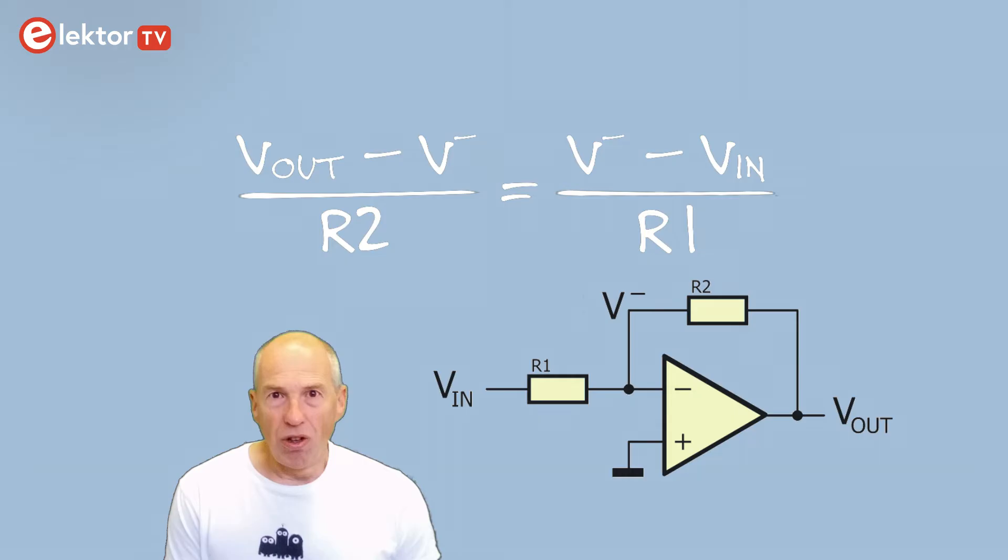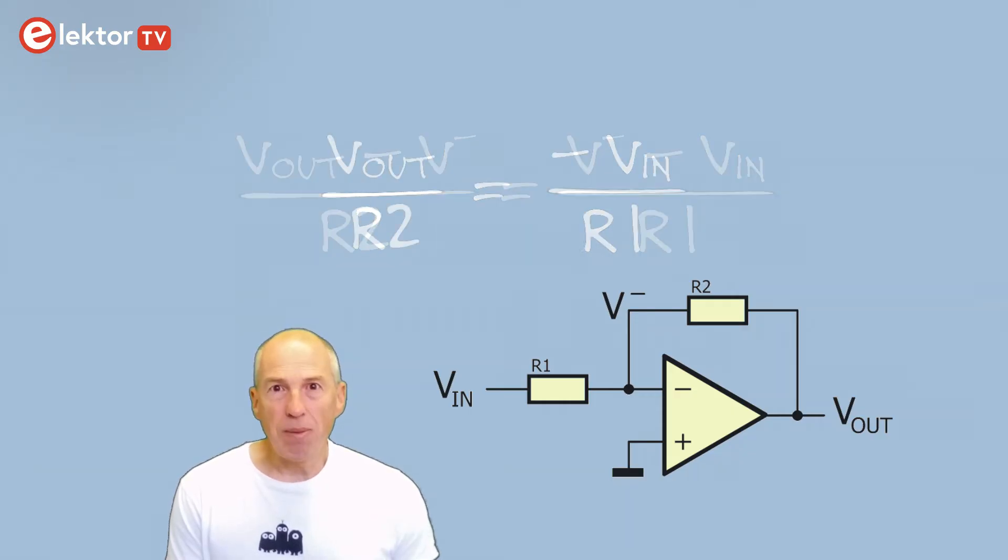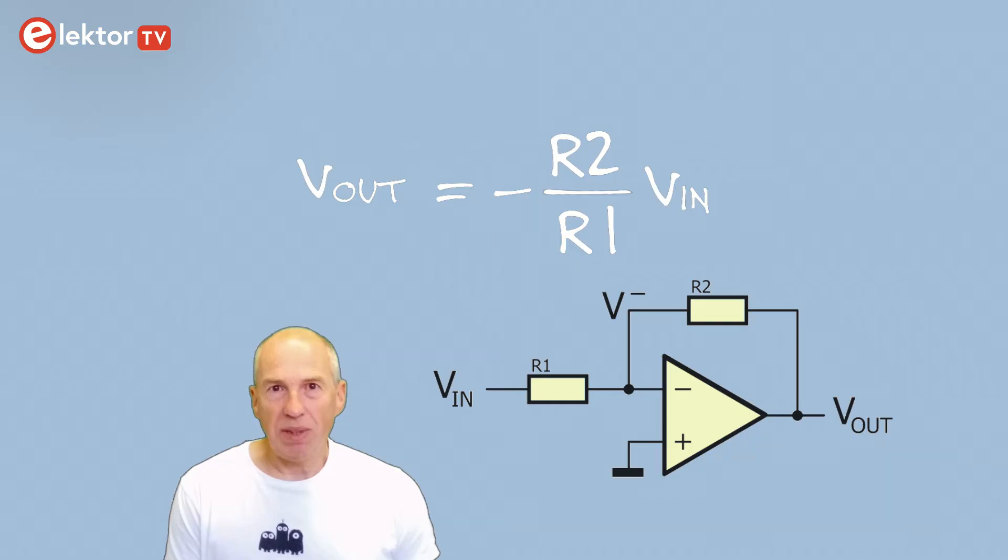But, as we just learned that thanks to negative feedback, the voltage on the inverting input is the same as on the non-inverting input, it is also zero volts and we can simplify the equation. Rearranging, we obtain this. This shows that we have indeed an inverting amplifier, of which the gain is R2 divided by R1.